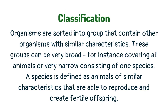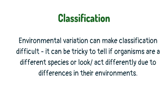Organisms are sorted into groups that contain other organisms with similar characteristics. These groups can be very broad, for instance covering all animals, or very narrow, consisting of one species. A species is defined as animals of similar characteristics that are able to reproduce and create fertile offspring. Environmental variation can make classification difficult — it can be tricky to tell if organisms are a different species or look and act differently due to differences in their environments.